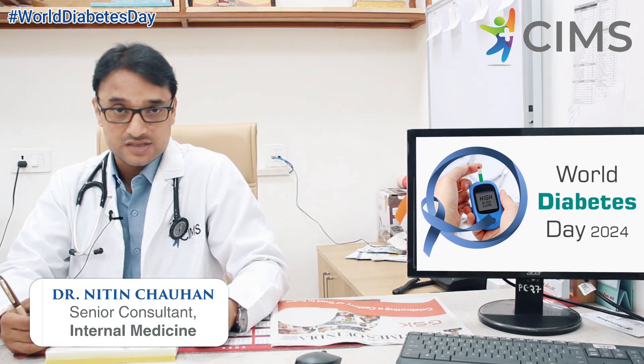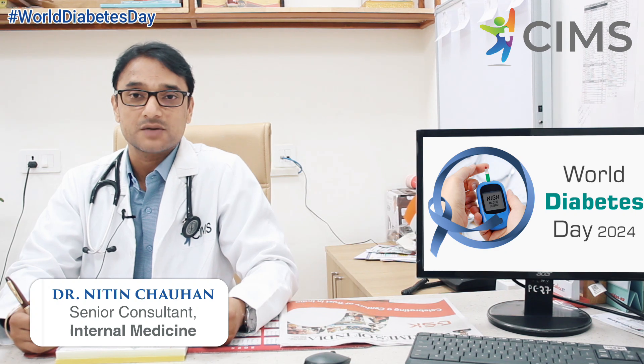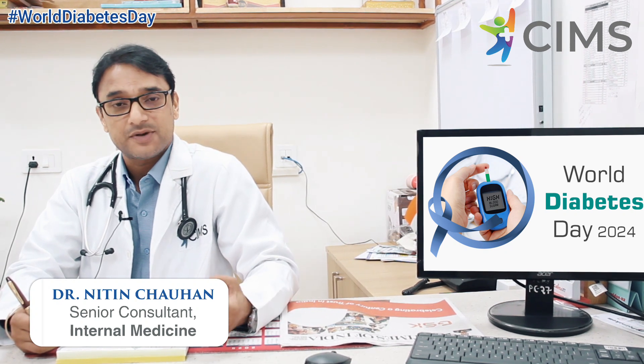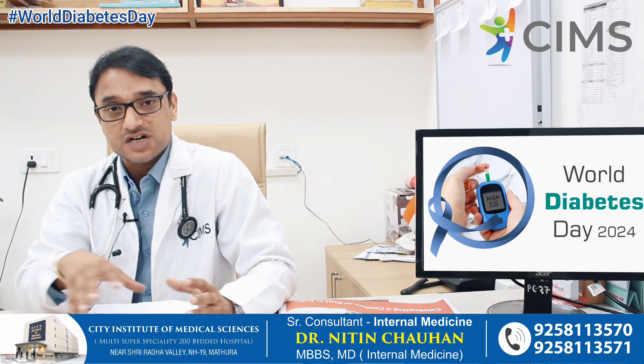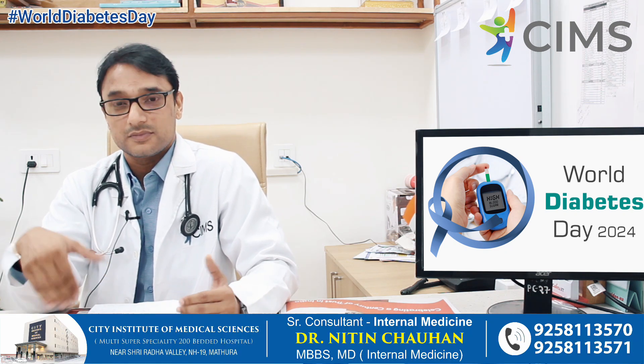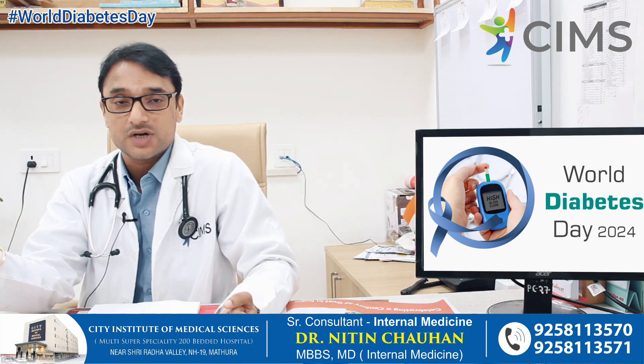Now talking about complications, there are three main microvascular complications we look for in every diabetic patient. It affects the retina in the eye, leading to diabetic retinopathy. It affects the kidneys, leading to nephropathy. And it affects the neurons, leading to neuropathy. We should screen for these complications in any patient who comes to us.